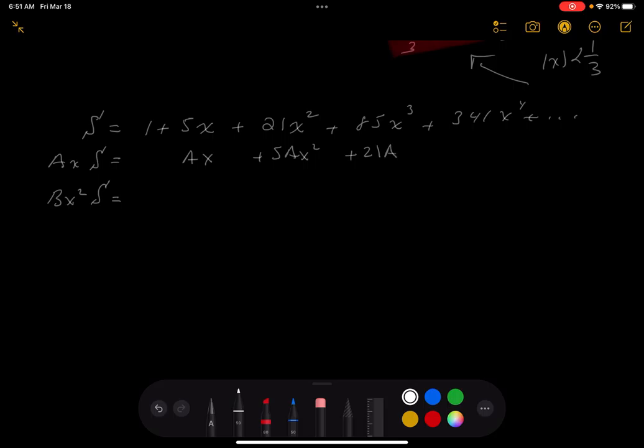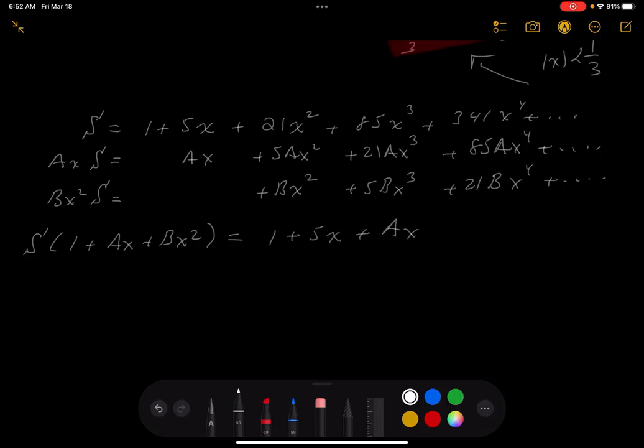And what do you get there? You would get AX plus 5AX squared plus 21AX cubed plus 85AX^4, yada yada yada. All right, let's do the BX squared now. What do you get there? You're going to get plus BX squared plus 5BX cubed plus 21BX^4 plus yada yada yada. Kind of add them together as I do that. I'm going to get a little better at this. It's going to be S. And then you're going to get what?